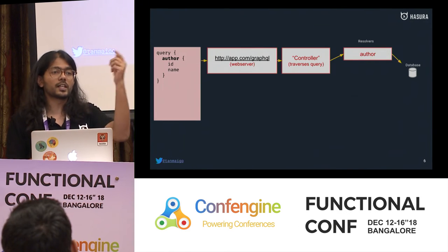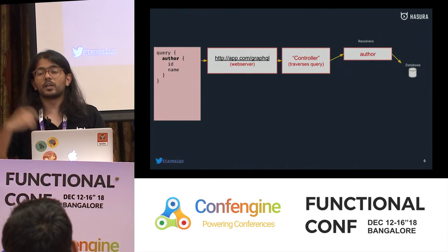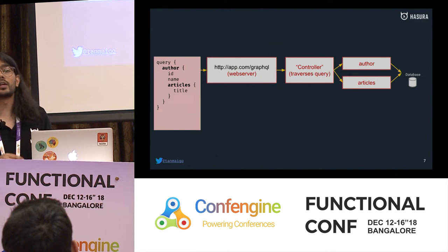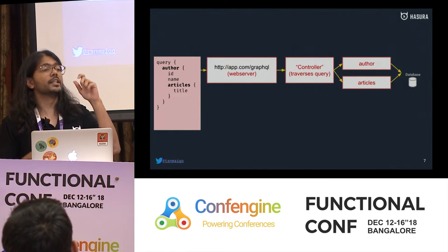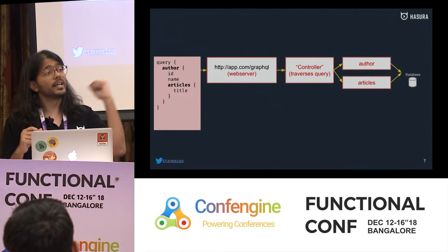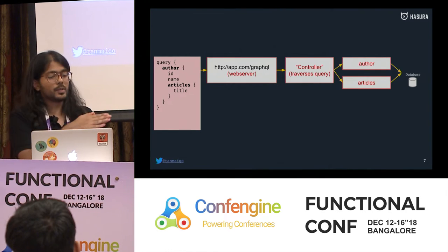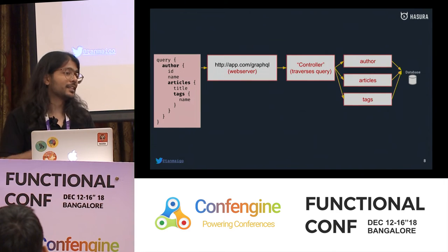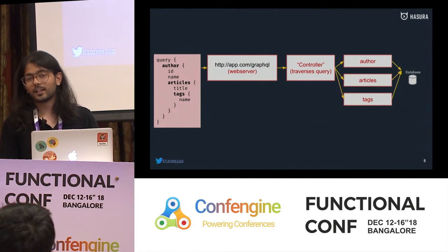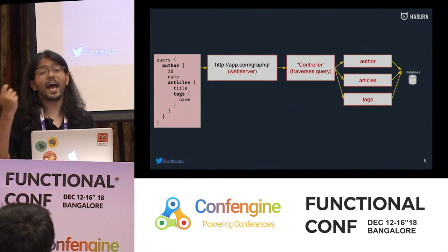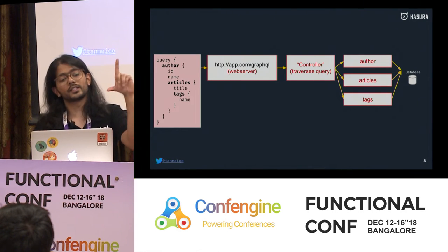If you also want all the articles written by an author, your backend calls the author function and the articles function independently — each hitting the database separately — and then merges the data. If each article also has tags, you now call three functions, each hitting the database individually. You can see where I'm going: this is the N+1 query problem. I remember the first time I wrote a web server with Django — everything worked with the ORM, then I put it in production, had 10 users, and the whole thing crashed.